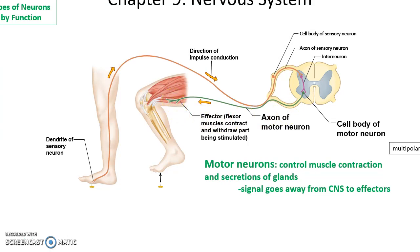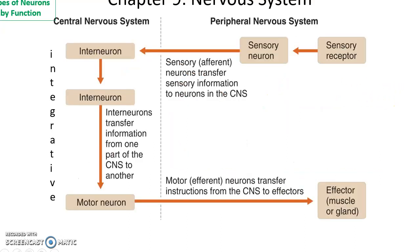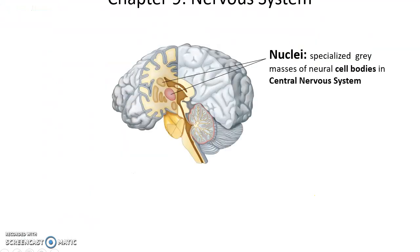Motor neurons control muscular contractions and secretions from glands. So the pathway is: sensory receptor → sensory neuron → interneurons within the central nervous system, which receive, process, and integrate the information → motor neuron → effector. Nuclei are specialized masses of neural cell bodies found in the central nervous system, specifically in the white matter. The nuclei will look kind of gray within the white matter.